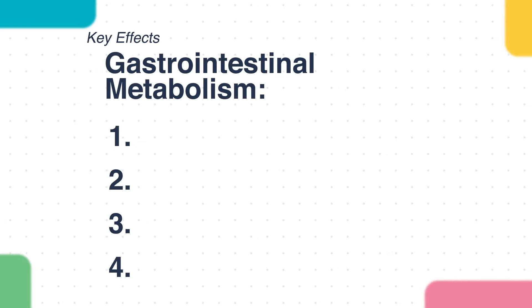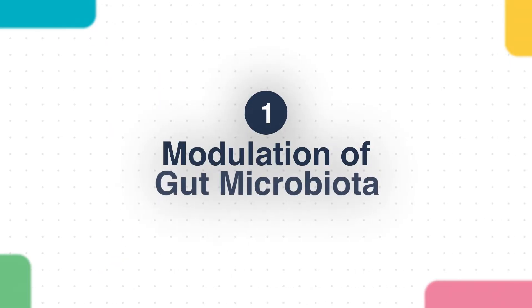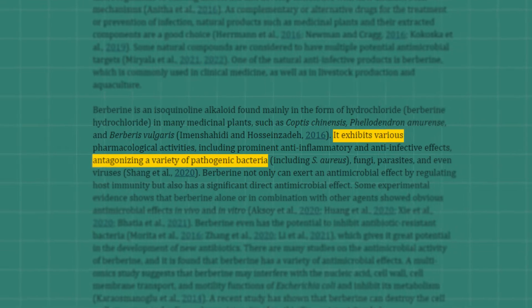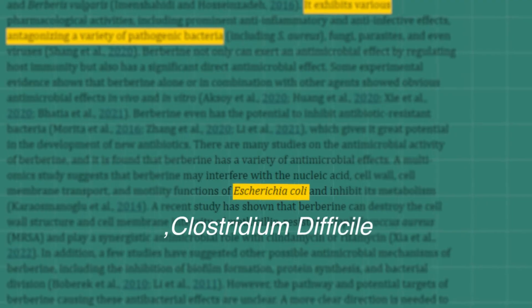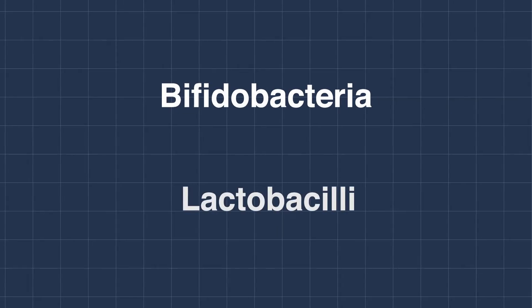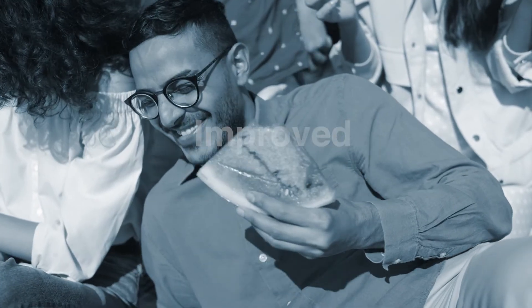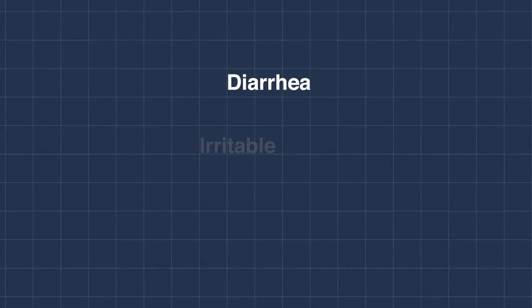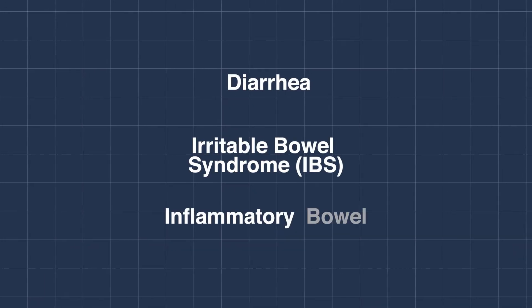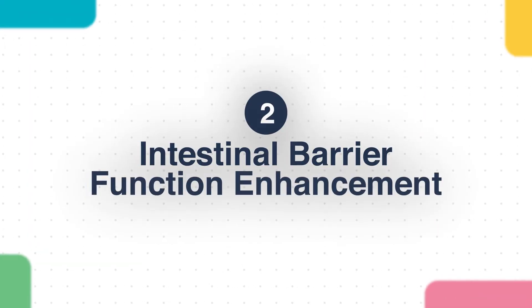Now let's talk about gastrointestinal metabolism. Berberine has a significant impact on gut microbiota composition and function. It can selectively inhibit the growth of pathogenic bacteria such as E. coli and Clostridium difficile, while promoting the growth of beneficial bacteria like Bifidobacteria and Lactobacilli. This modulation of gut microbiota contributes to improved gut health and may alleviate symptoms of gastrointestinal disorders such as diarrhea, irritable bowel syndrome, and inflammatory bowel disease.